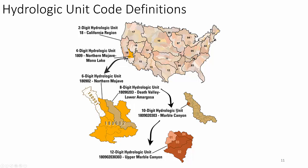That sub-basin can be divided into the watershed — the 10-digit hydrologic unit code — such as the Marble Canyon watershed. Then the sub-watersheds of Marble Canyon are the 12-digit codes: Upper Marble Canyon, Middle Marble Canyon, Lower Marble Canyon, etc. There are only four of these 12-digit codes within this 10-digit code. You could divide it into as many as 99, but you don't, because it's all about the drainage basins and their contiguous flows.